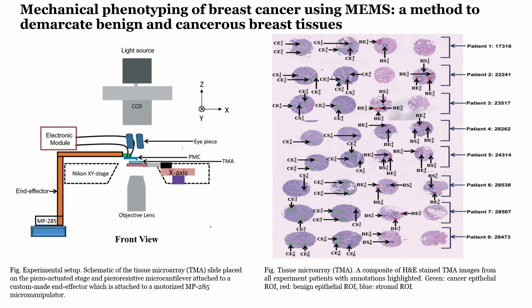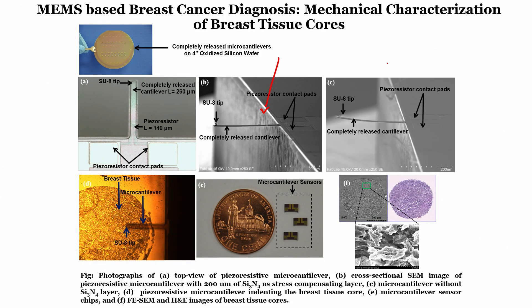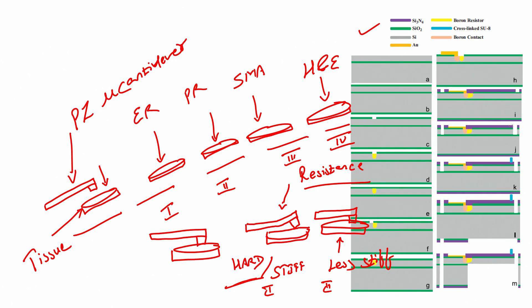This is an inverted microscope with an eyepiece and an XY stage. We have used a Nikon MP285 micro-manipulator so you can indent the tissue with micron precision. There is an effector, and if you see, the piezo-resistive cantilever will look like this if you properly fabricate it. In this particular process flow, there is silicon nitride being used.